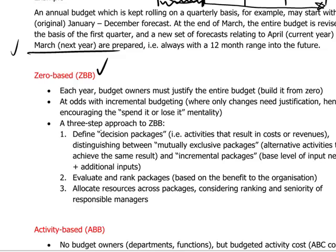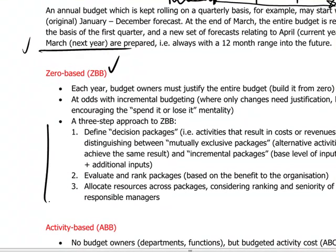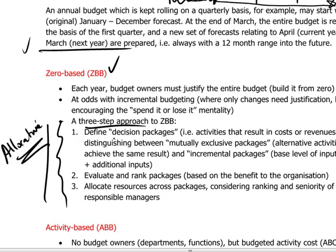The budgetary process in zero-based budgeting, looking at the three steps, is basically an allocative process of allocating resources to different departments. Resources are scarce, so departments and units within the company have to compete for them and make a business case through their budget in order to be awarded the resources necessary. There's a kind of internal competitive process as the different decision packages are being considered by a committee.